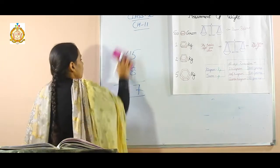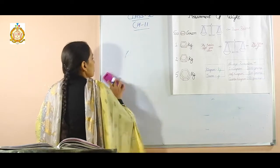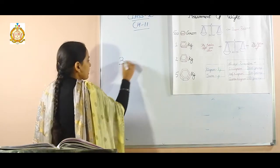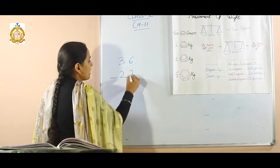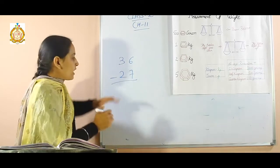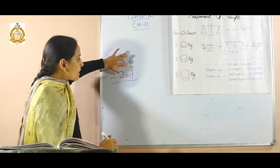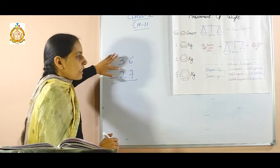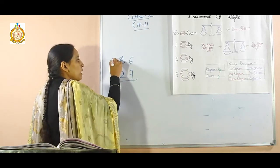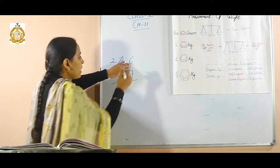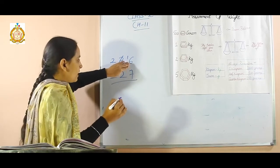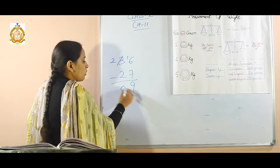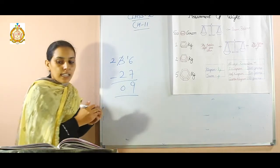Let us solve one more sum for subtraction so that you can understand. 36 minus 27. Here again, 6 is lesser and 7 is greater, so take a borrow from the left hand side. Then it becomes 2 and 1 on that side, it becomes 16. 16 minus 7 becomes 9 and 2 minus 2 is 0. That means 9 is the answer.